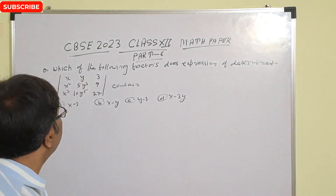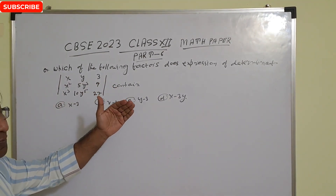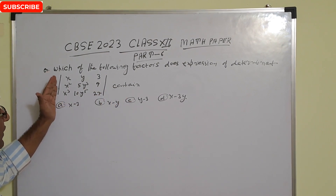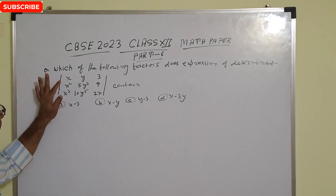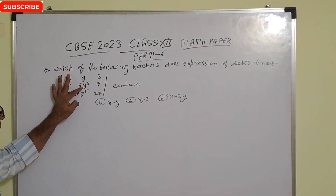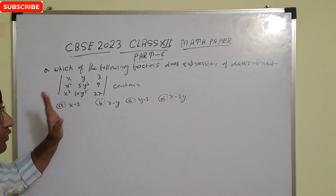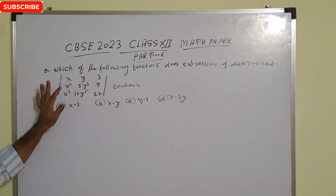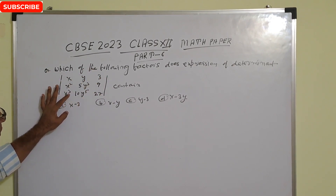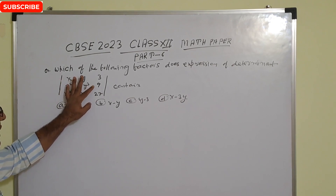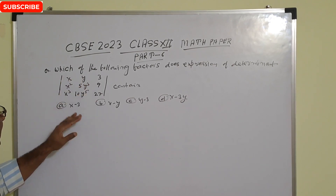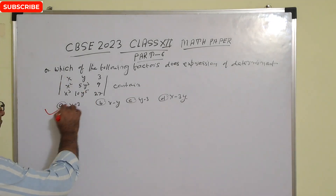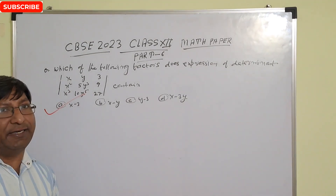Which of the following factors does the expression of the determinant contain? If we solve this determinant using the property C1 minus C3, we get: x minus 3, x squared minus 9, and x cubed minus 27. Now x squared minus 9 equals (x+3)(x-3), and x cubed minus 27 is a cube minus b cube form giving (x-3) as a factor. So x minus 3 is the common factor, and option A is the correct answer.